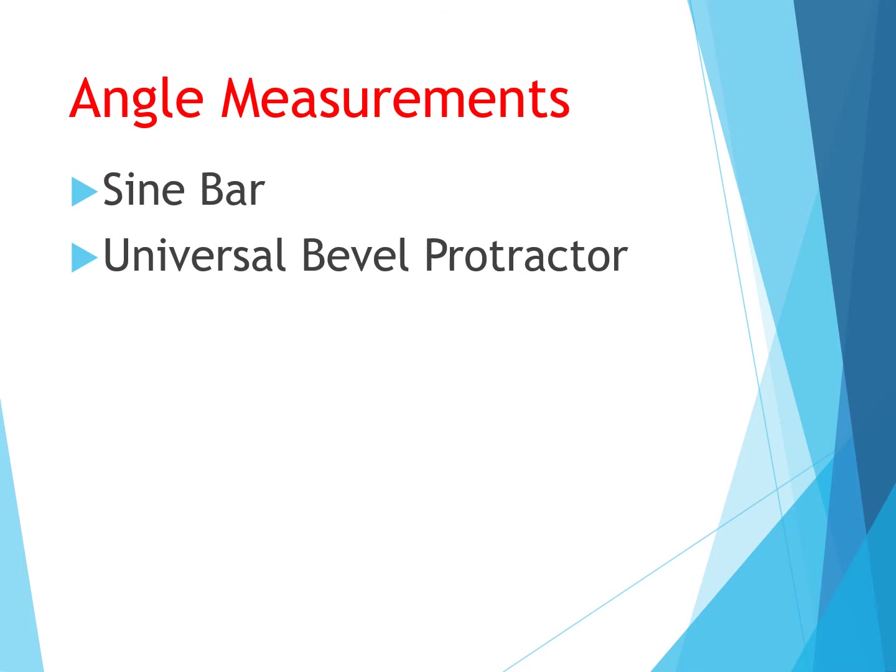The basic unit of angular measurement is a right angle. It is defined as the angle between two lines which intersect so as to make the adjacent angles equal. When I make these angles equal, I will be able to measure the angle.